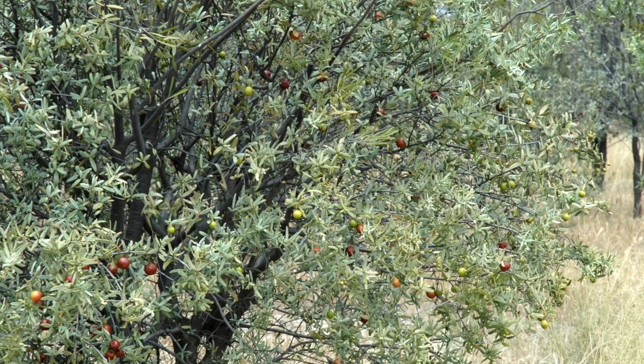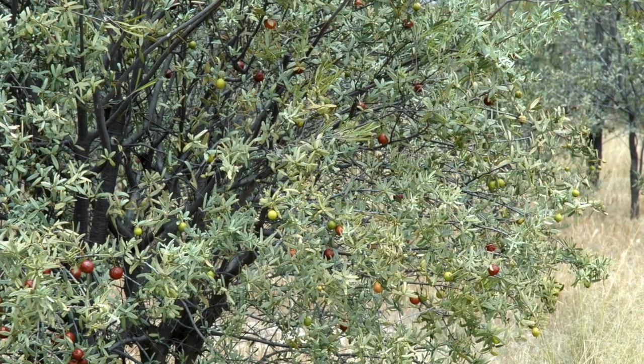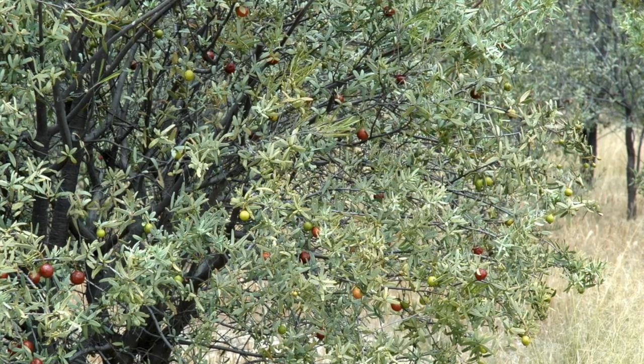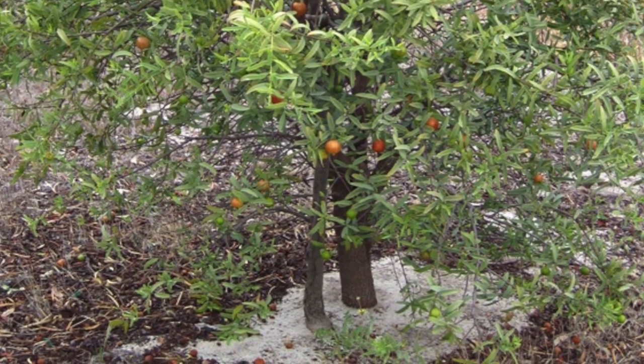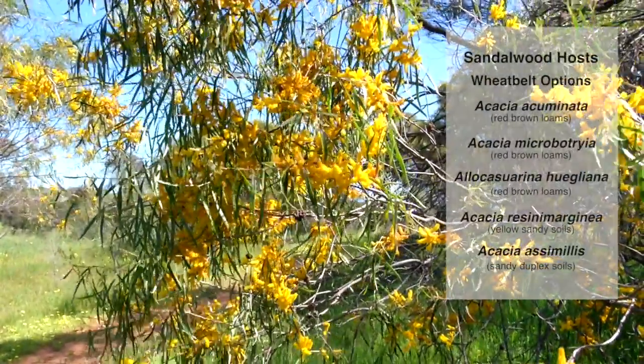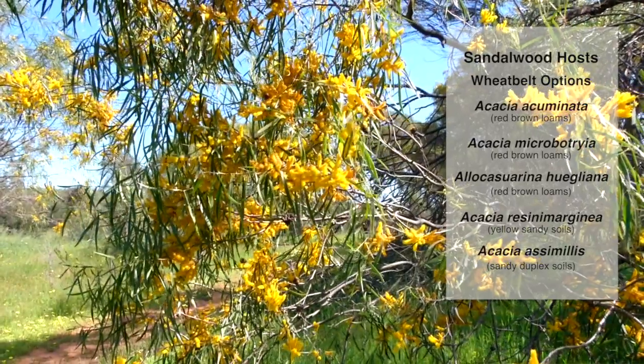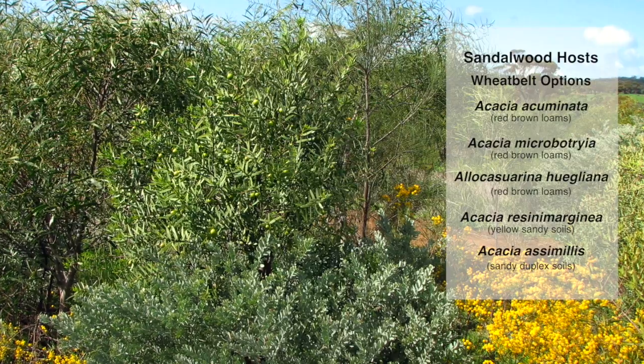Sandalwood is a native small tree species of Western Australia. It's harvested in the wild, and otherwise grown in blocks or rows. It's an interesting plant because it's a parasite of other trees — to get its nutrients and water it must parasitize the roots of another tree. When grown in a plantation system, it needs a host species; the most common host in the wheatbelt is Acacia acuminata, the jam wattle.